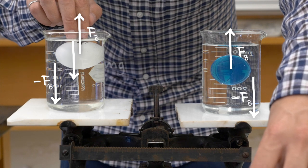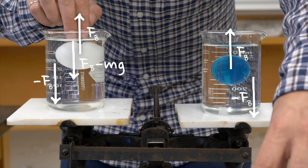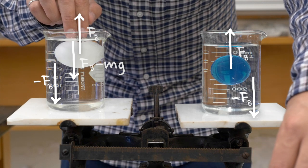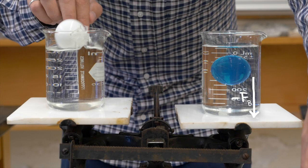Instead, the downward force from my hand is equal to the buoyant force minus the weight of the ping pong ball, so that overall, both beakers get heavier by the same amount. It's just the weight of water displaced by the ping pong ball, or the acrylic ball because it has the same volume.